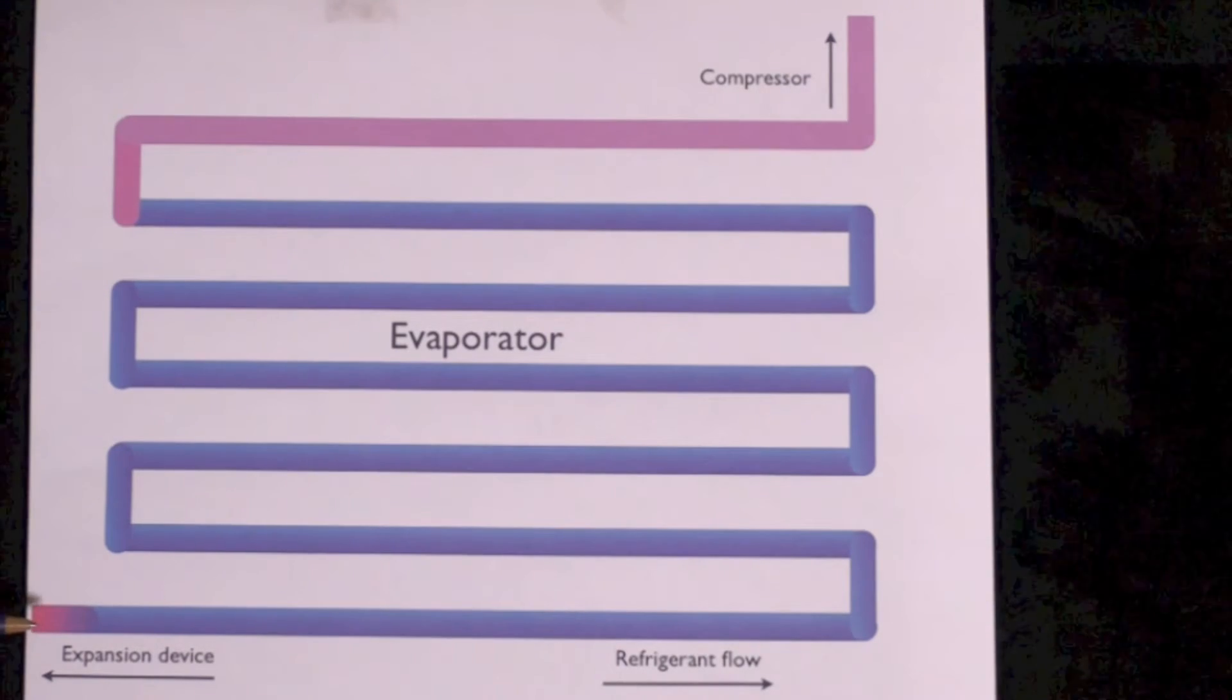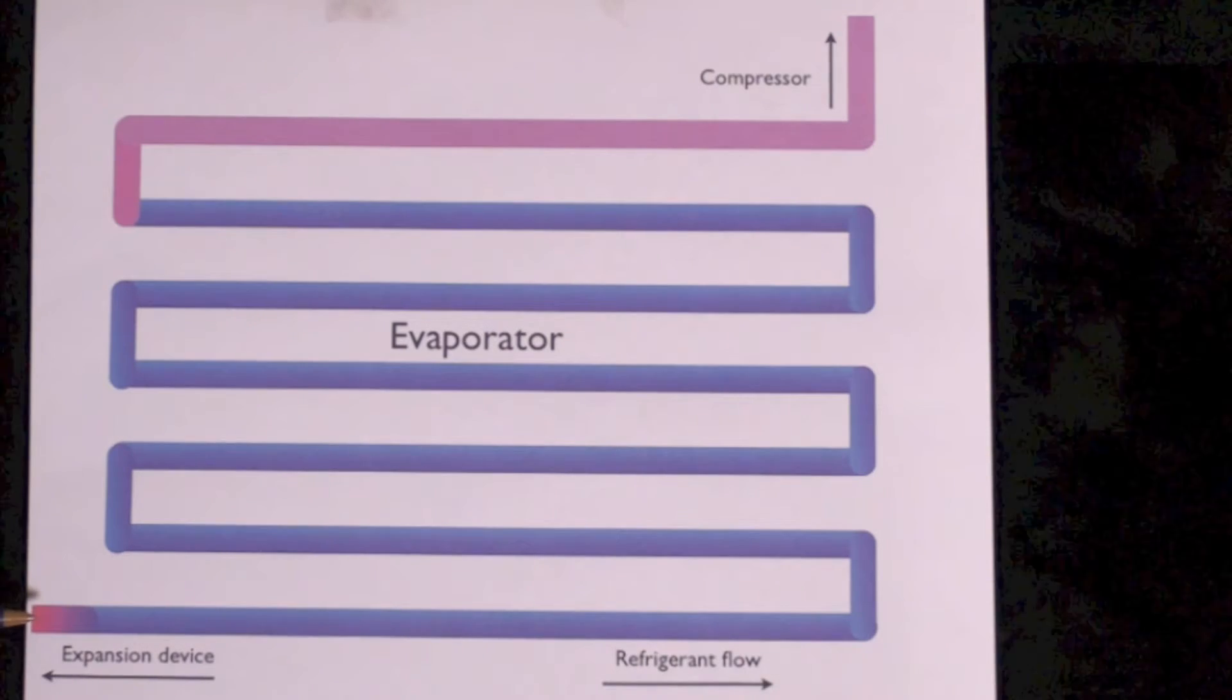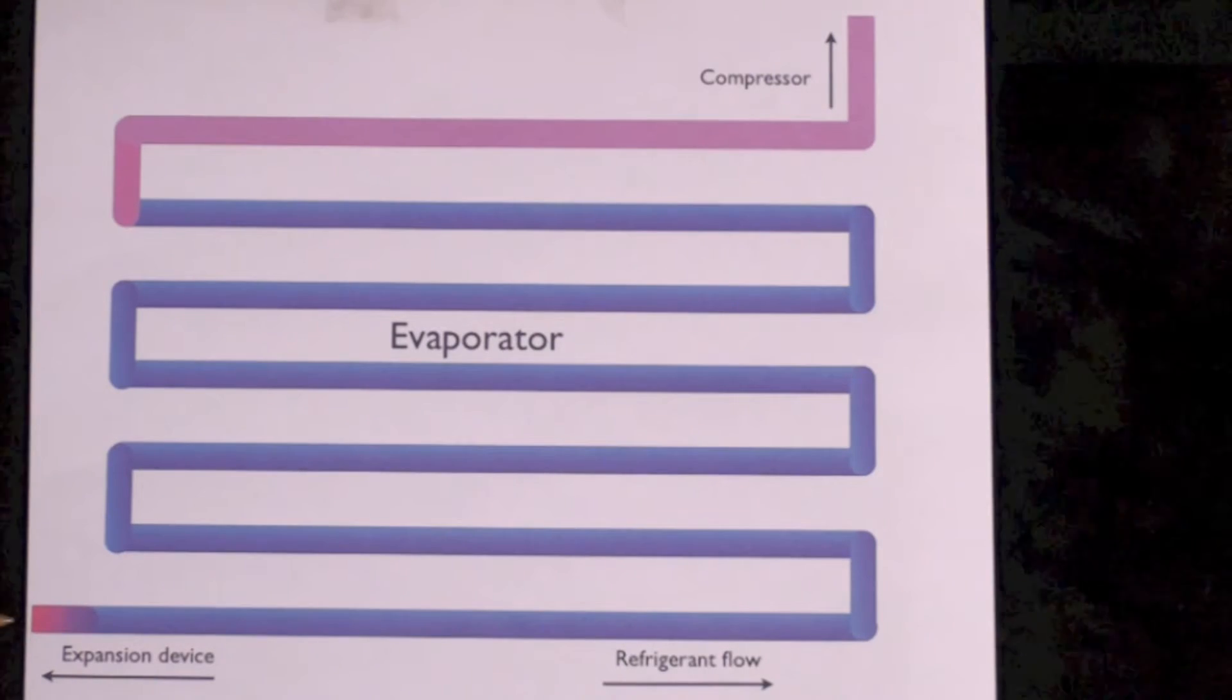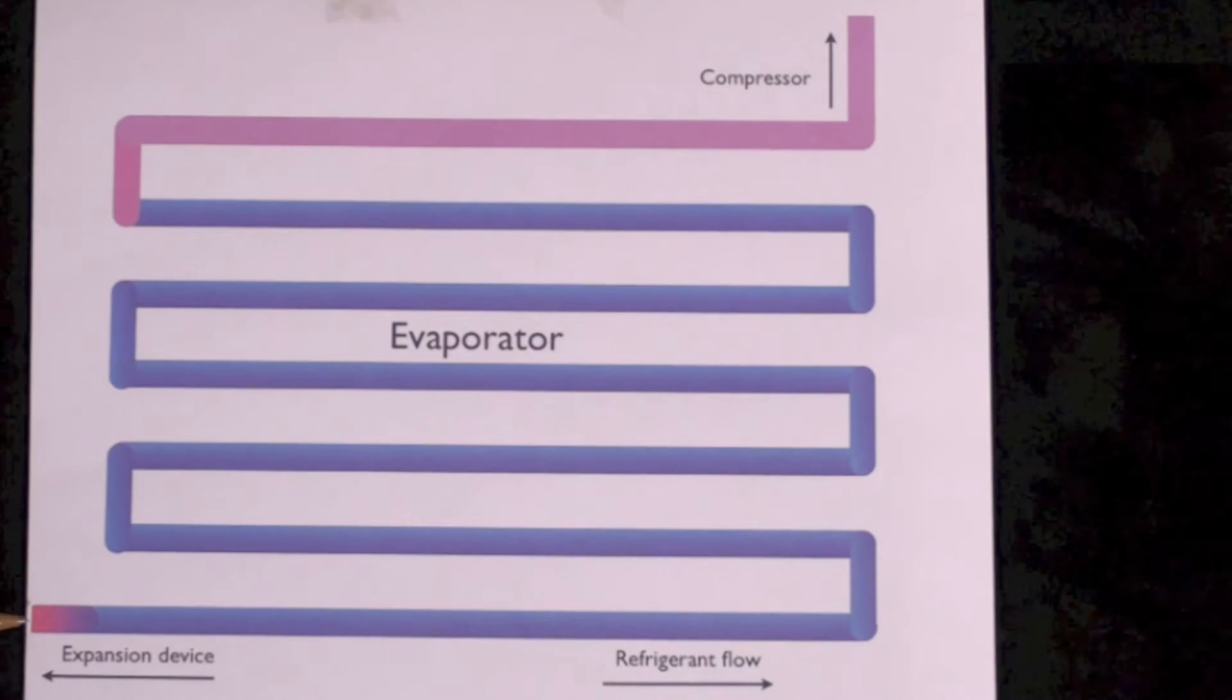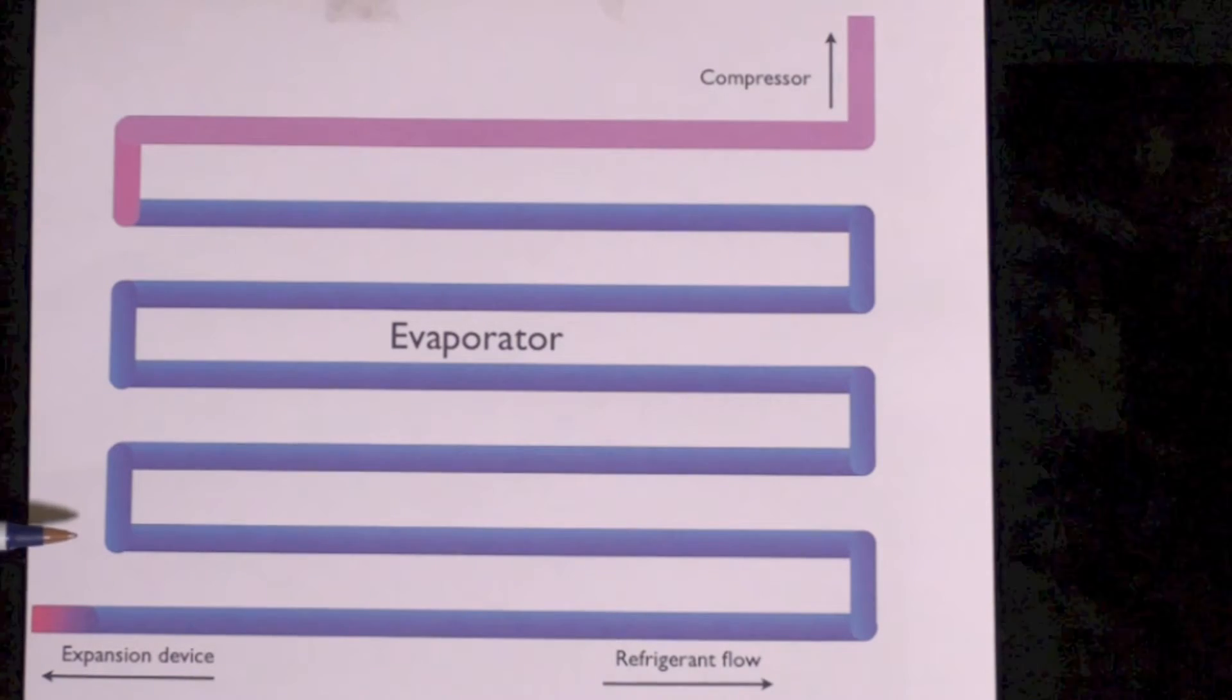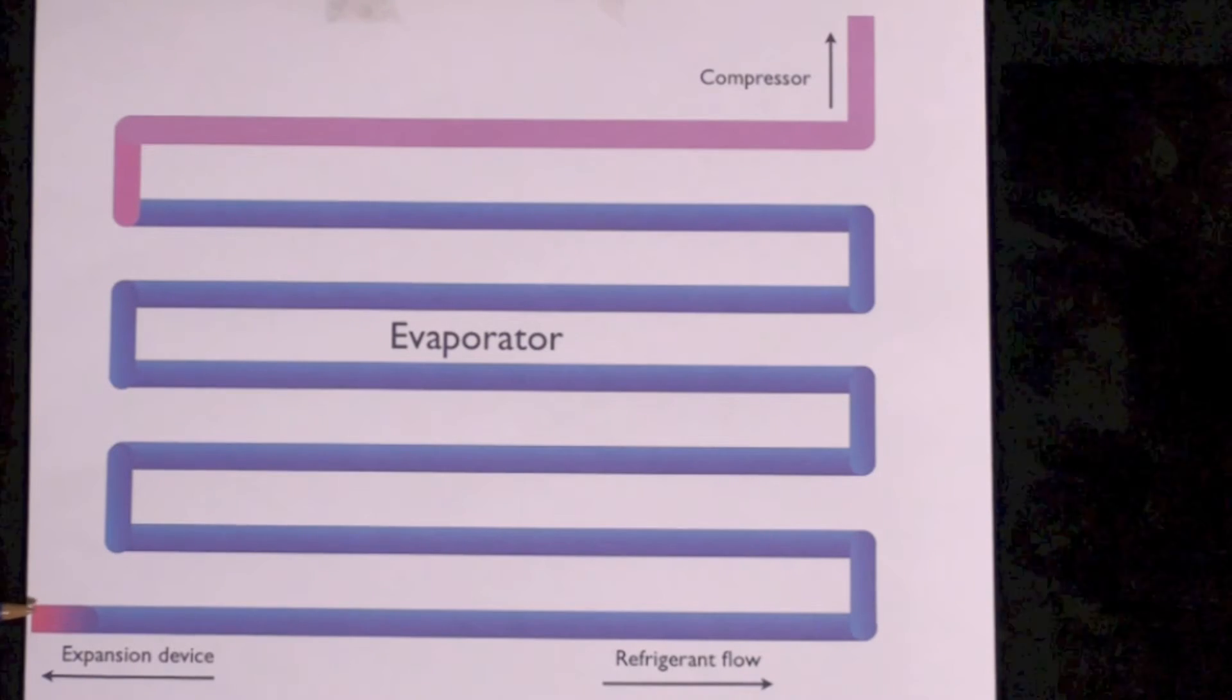We started out with high pressure on the other side of the expansion device. As soon as we come out of the expansion device, the pressure drops. If the pressure drops, the boiling temperature of the refrigerant drops. Okay, if I've got 95 degree refrigerant coming out of here...